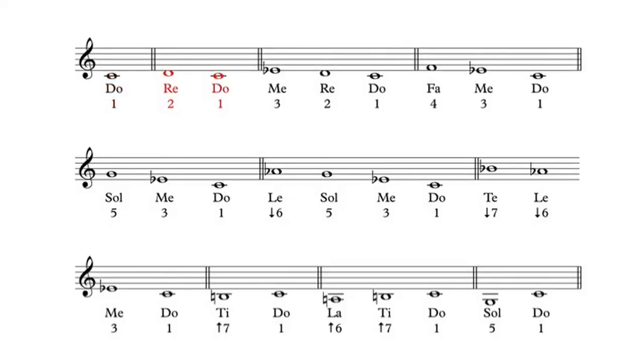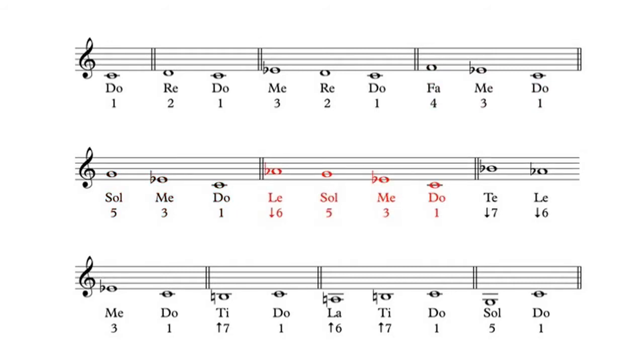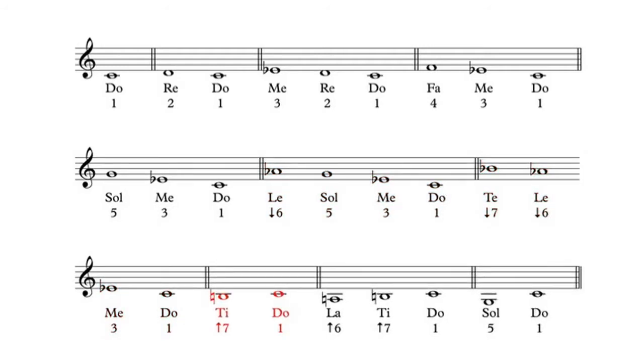The techniques you use to learn your major scale degree patterns will also work for the minor mode patterns. We learned a little melody consisting of all the scale degree patterns in order for the major mode — in the minor mode there's a similar melody, with differences because of the extra scale degree patterns. On solfege it sounds like this: DO, RE, DO — ME, RE, DO — FA, ME, DO — SOL, ME, DO — LE, SOL, ME, DO — TE, LE, SOL, ME, DO — TI, DO — LA, TI, DO — SOL, DO.